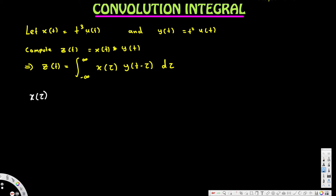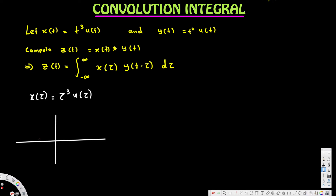For x of tau, we take x of t and replace t with tau, so this becomes tau cubed u of tau. Tau cubed is a polynomial function, and u of tau means it only turns on after zero. So the graph is zero before zero, and after zero it turns on and looks like a cubic curve. This is x of tau equal to tau cubed u of tau.